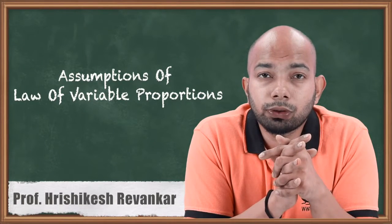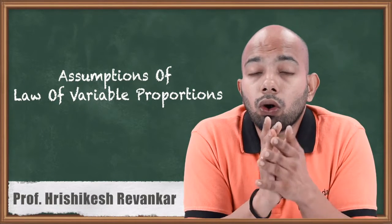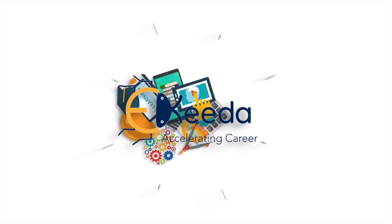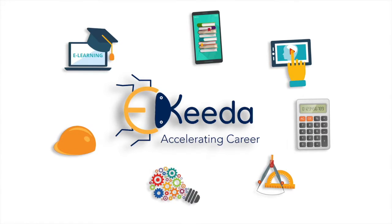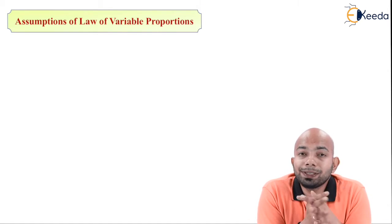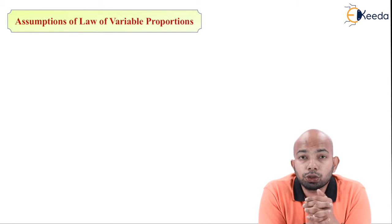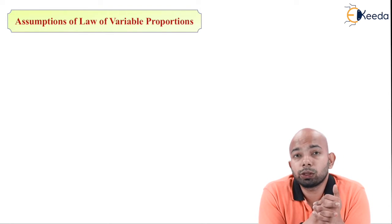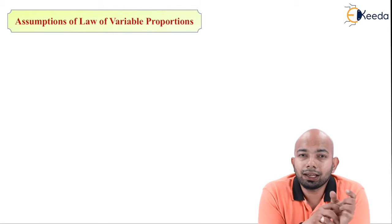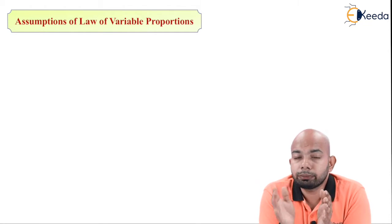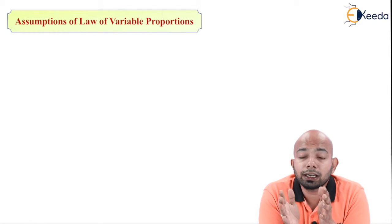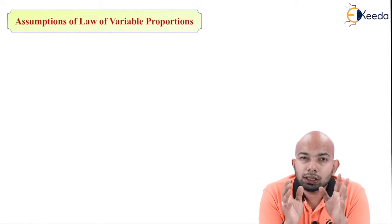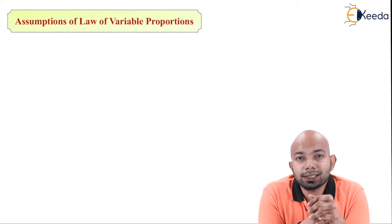Hello friends. We will be discussing the concept of the assumptions of the law of variable proportions. When we speak about the law of variable proportions, we know that we are talking about one input factor being variable and the other input factors being constant. There are certain assumptions that we will be discussing.